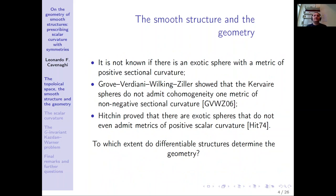It is not known if there is an exotic sphere with a metric of positive sectional curvature. Moreover, Groves-Verdiani-Wilking-Ziller showed that there are some exotic spheres — named as 'curved spheres' — that do not admit cohomogeneity-one metrics of non-negative sectional curvature. Therefore, a metric with lots of symmetries and positive sectional curvature cannot exist on some exotic manifolds. In contrast, Nigel Hitchin proved that there are exotic spheres that do not even admit metrics of positive scalar curvature. This all raises the question: to which extent do differentiable structures determine the geometry?